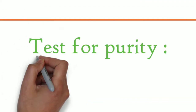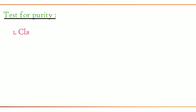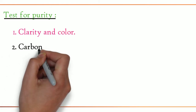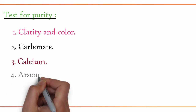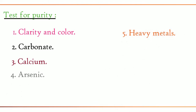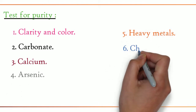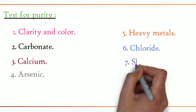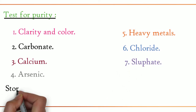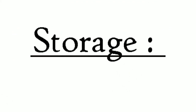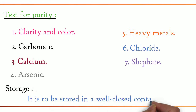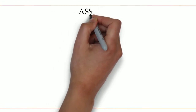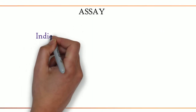Test for purity: 1. Clarity and color, 2. Carbonate, 3. Calcium, 4. Arsenic, 5. Heavy metals, 6. Chloride, 7. Sulfate. Storage: it is to be stored in a well-closed container.